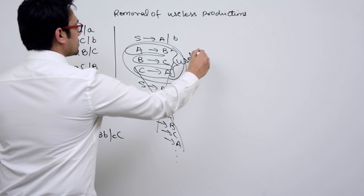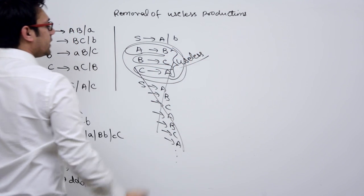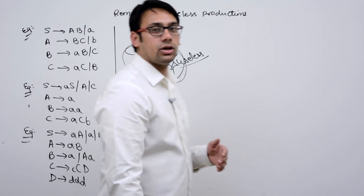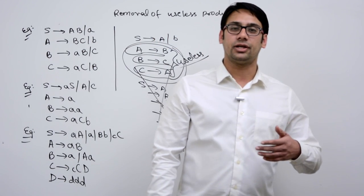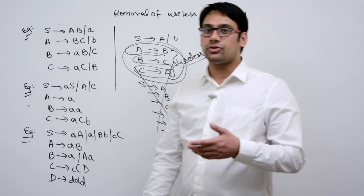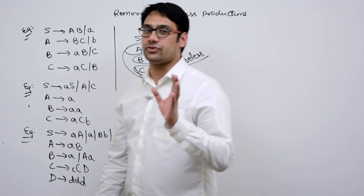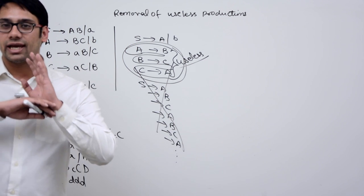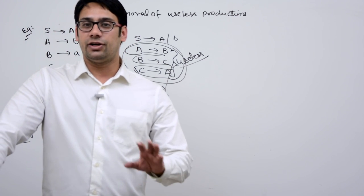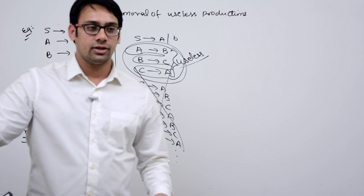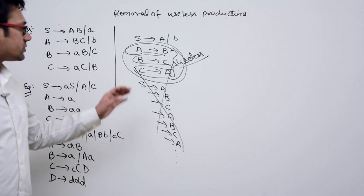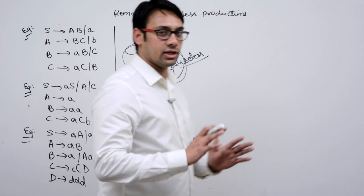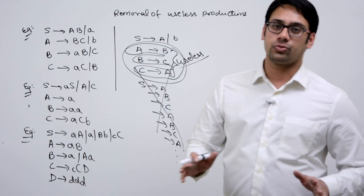Because of this loop you will not be able to generate any string, so these kinds of productions are useless. A production which is directly generating a string or a terminal is useful, because it may be able to generate some kind of string afterwards. But if a production, after any number of steps, cannot generate a string, then it is useless. We have to identify and remove those productions.